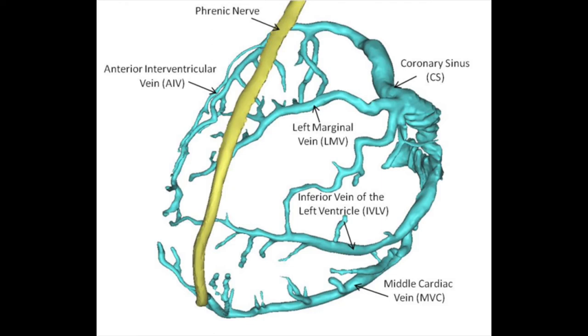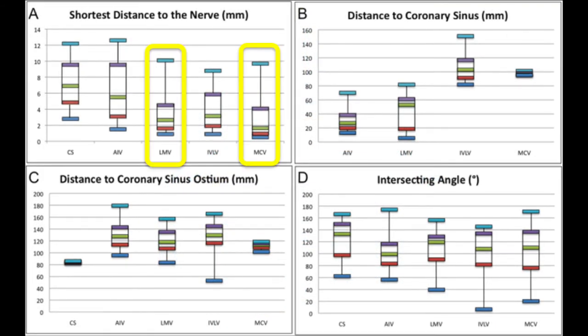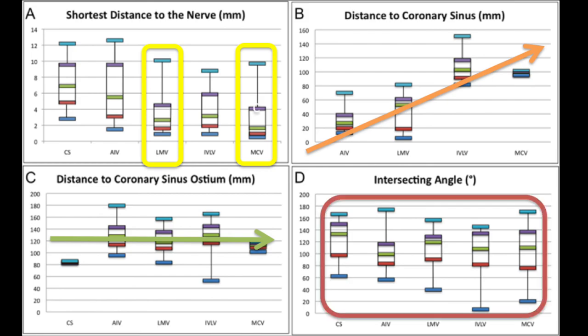We found that the phrenic nerve overlaps with the left marginal vein in 53% of specimens. Note that the left marginal vein is a common location for a left ventricular pacing lead. We also found the nerve courses closest to the left marginal vein and the middle cardiac vein. The nerve was typically located on basal regions at the anterior and apical regions at the inferior side of the heart. The distances to the coronary sinus ostium were consistent between overlaps, and there was high variation in the overlapping angles.